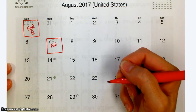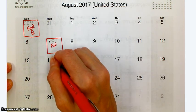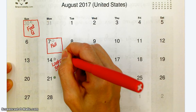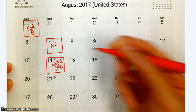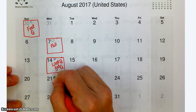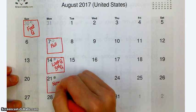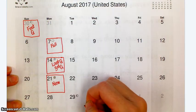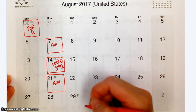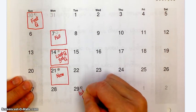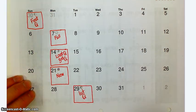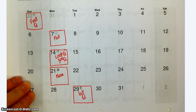On August 14th, what does that mean? Third quarter. Third quarter or last quarter. On the 21st, what is that? That is new moon. And what about the 29th? First quarter. First quarter.